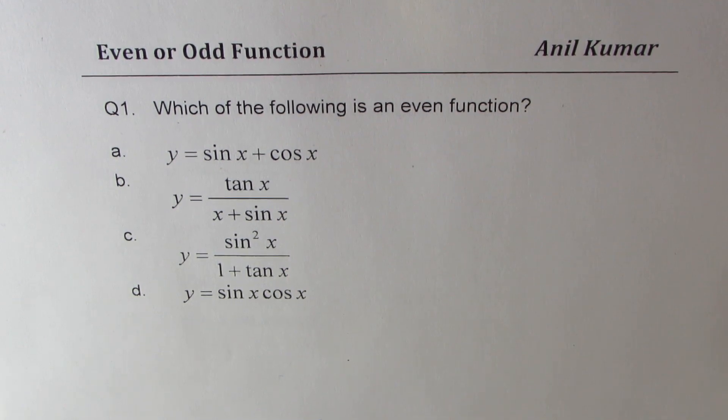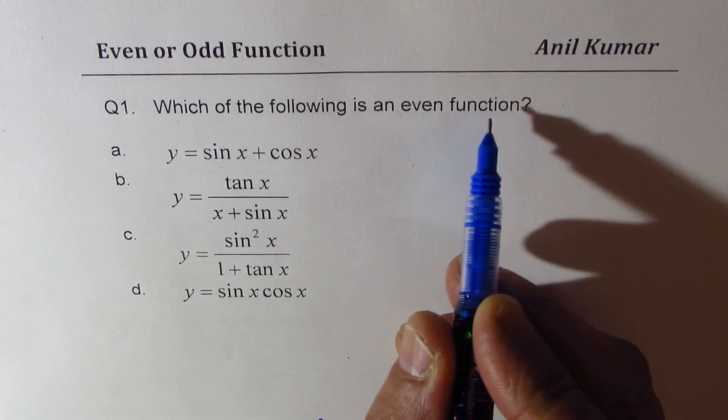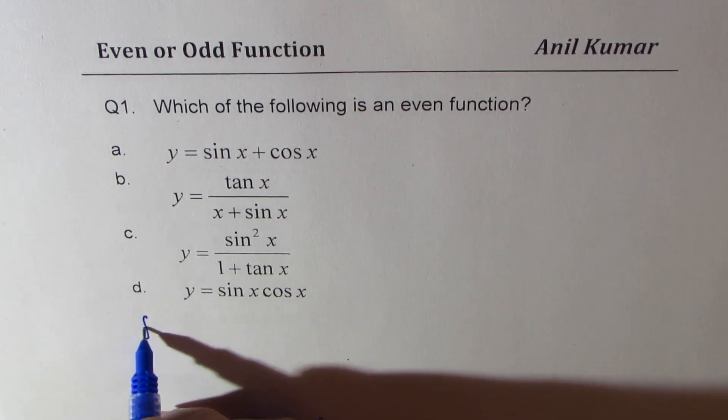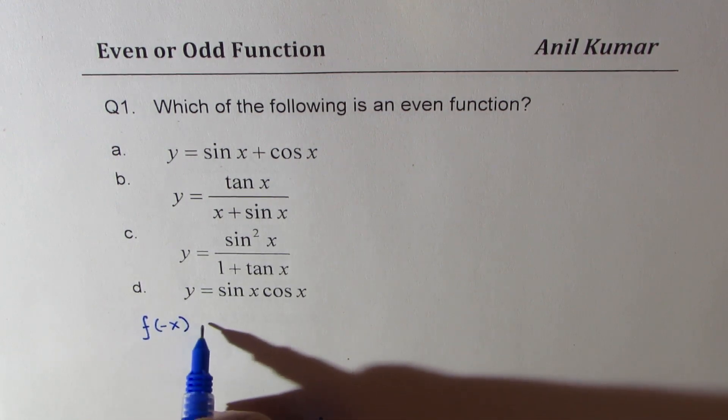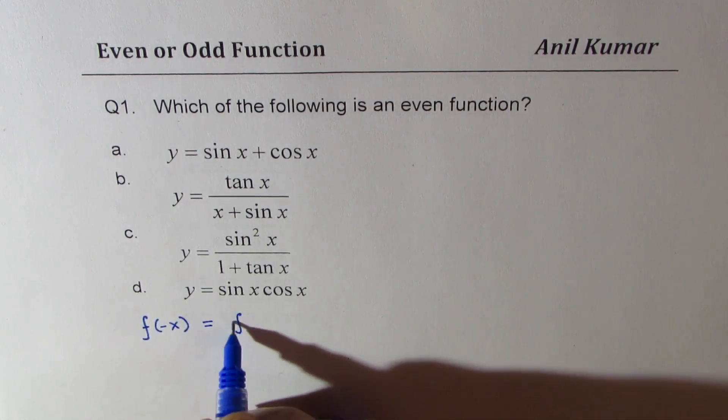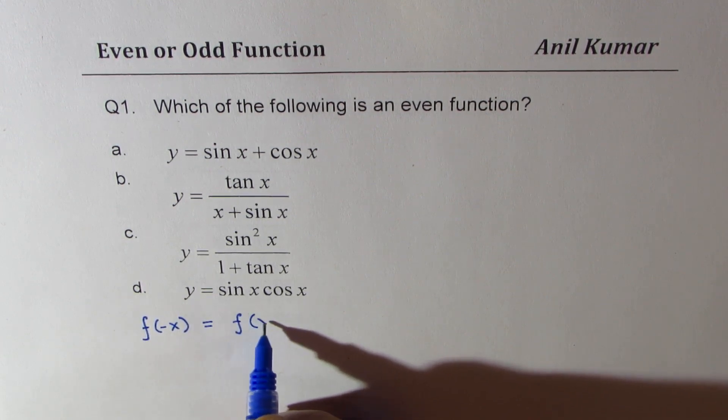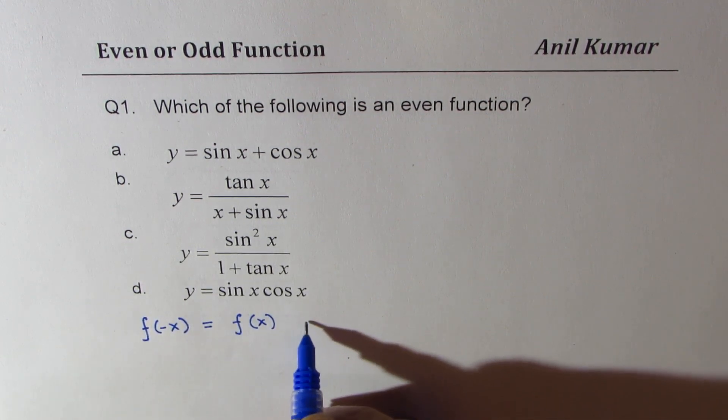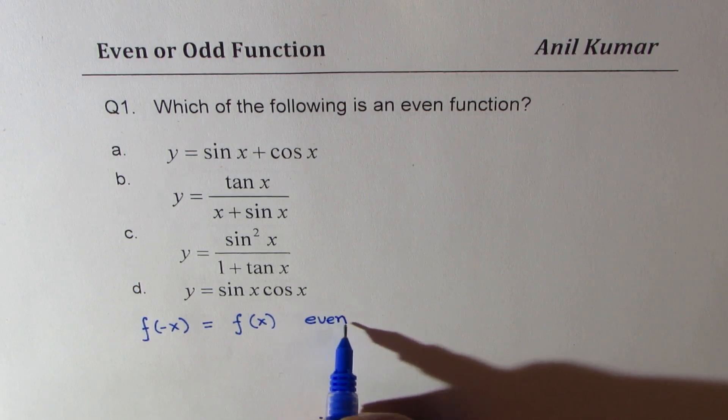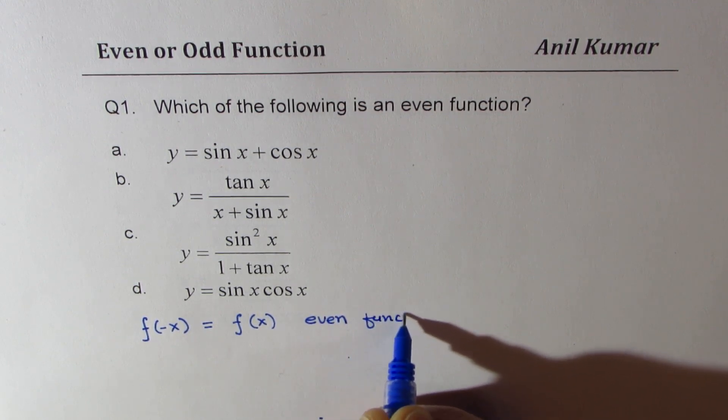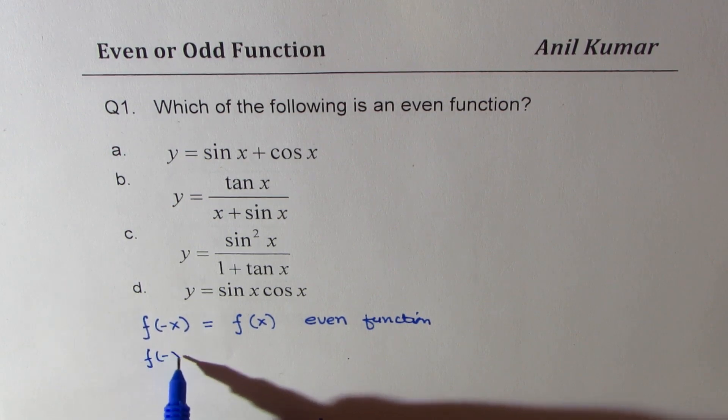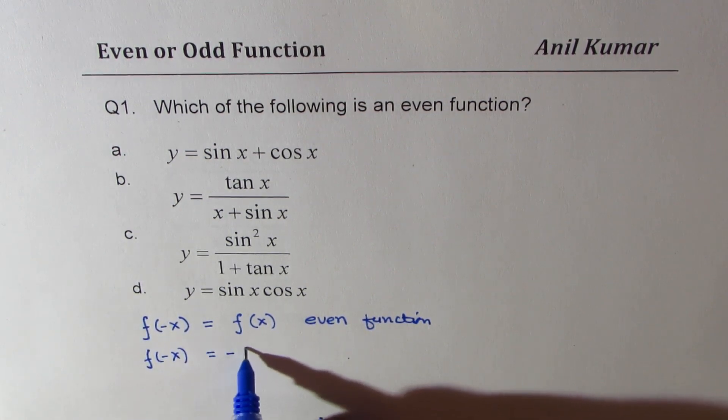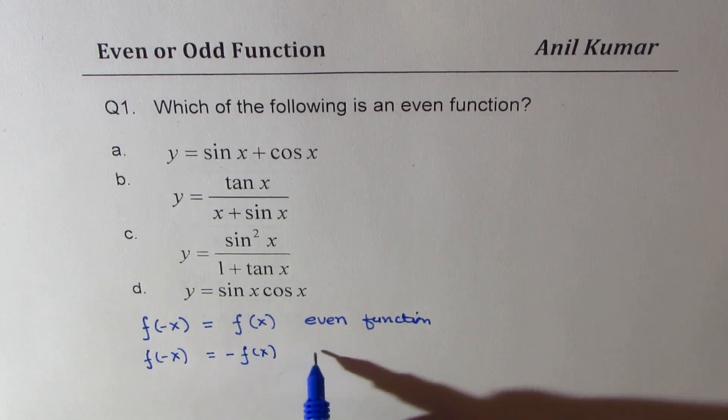Let us first try to understand what are even functions. So for any function if we try to figure out what is f of minus x and if we get f of minus x as equal to f of x then we say it is an even function. If we find f of minus x to be equal to negative f of x then it is called an odd function.